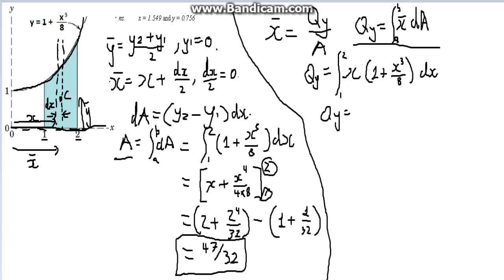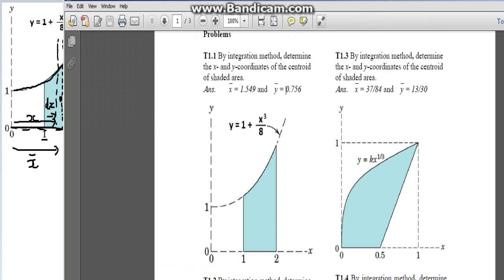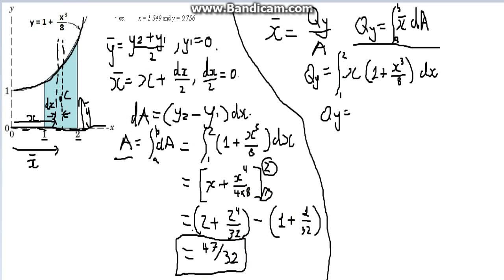Okay, this is the second part of the first video. As I was saying, this is the question that was given from the tutorial: by integration method, determine the x and y coordinates of the centroid of the shaded area. So we want to find the centroid of this shaded area over here. Let's just quickly jump back into it. We found the area, now we're finding the x-coordinate.